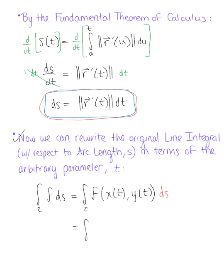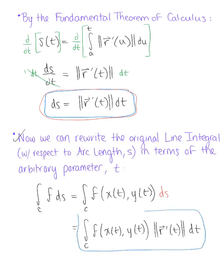But we're going to now replace that ds with what we just found. So this becomes the line integral over C of the function f of x(t), y(t). And we replace that ds with the magnitude of the tangent vector with respect to t, dt. And so this is the official line integral form for a scalar valued function in terms of an arbitrary parameter t.